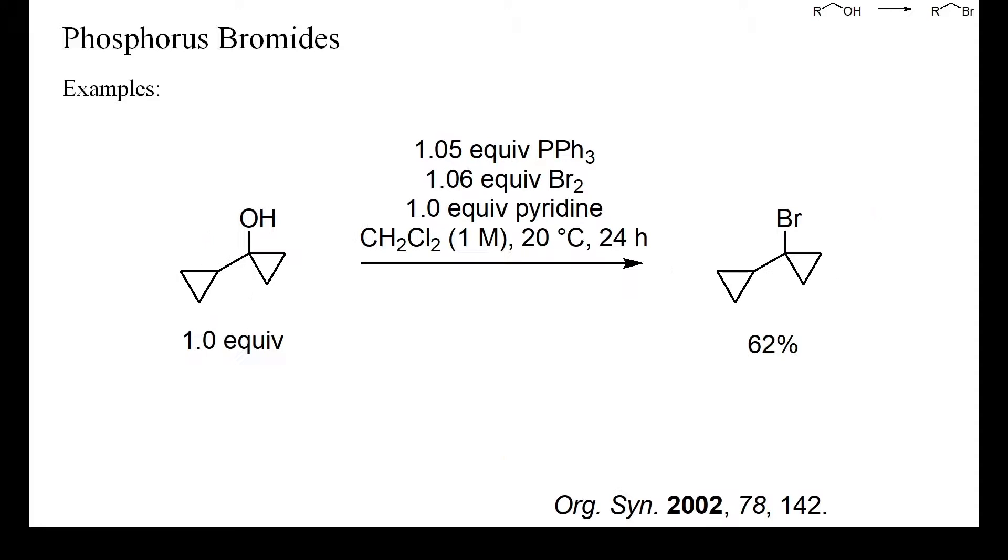In this example, a tertiary cyclopropanol was converted into a bromide at room temperature in dichloromethane in the presence of one equivalent of pyridine. These mild reaction conditions were necessary because the starting alcohol readily isomerized to an ethyl ketone, both under acidic or basic reaction conditions or upon excessive heating.